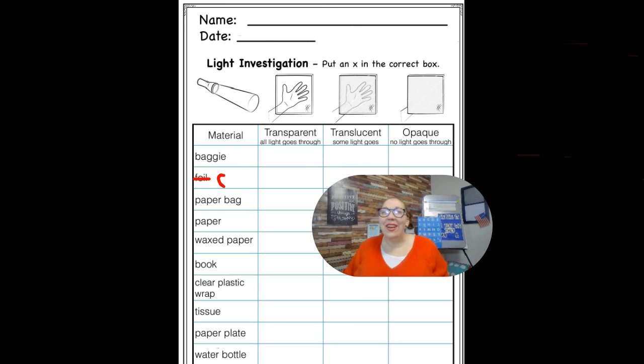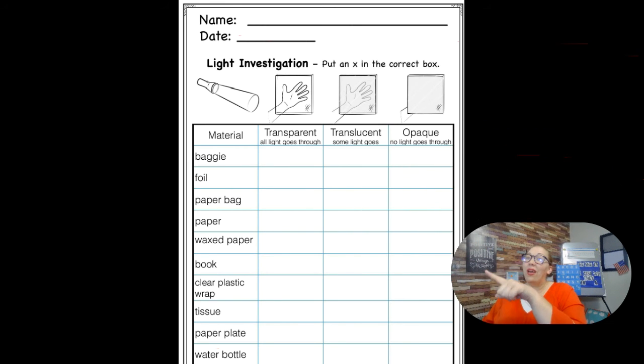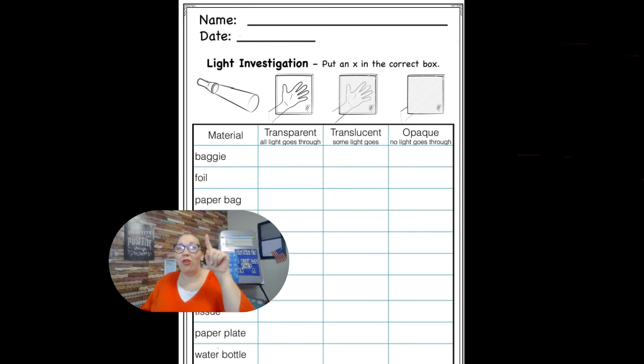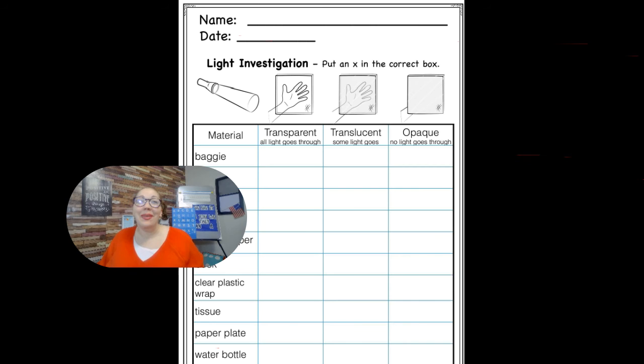Okay friends, when you are finished and you have an X on all of your items, so one X for baggie, one X for foil, one X on a paper bag, then go ahead and add it to our completed assignments, and we are finished for today.